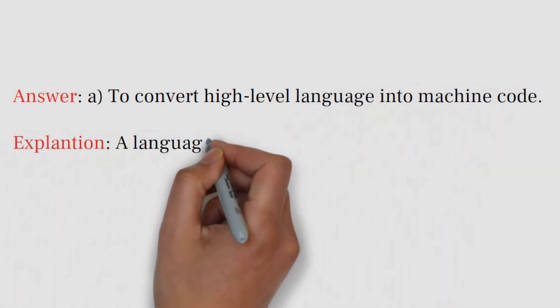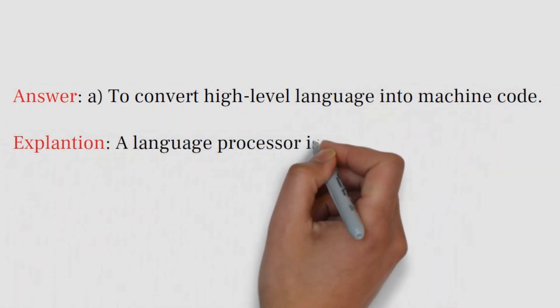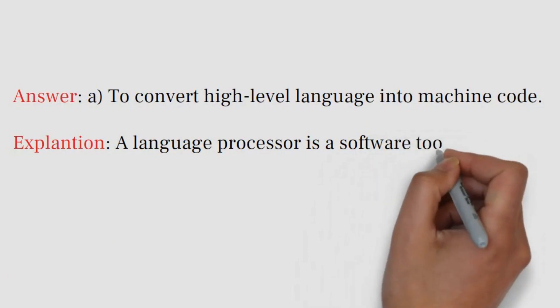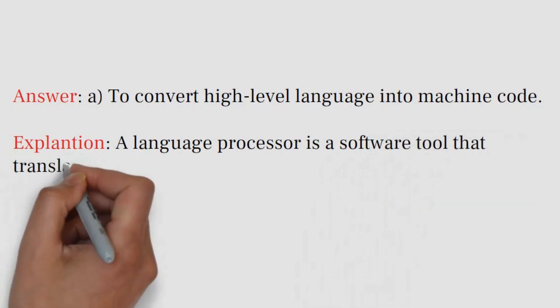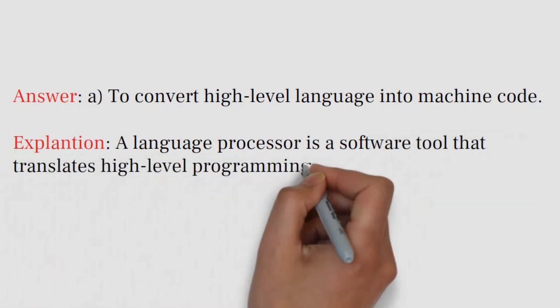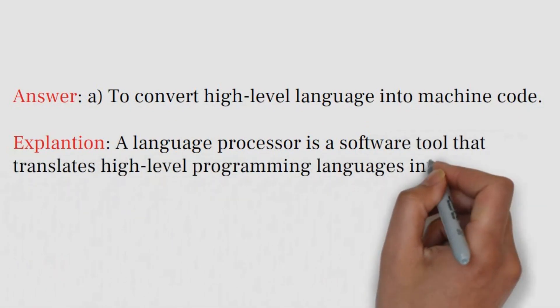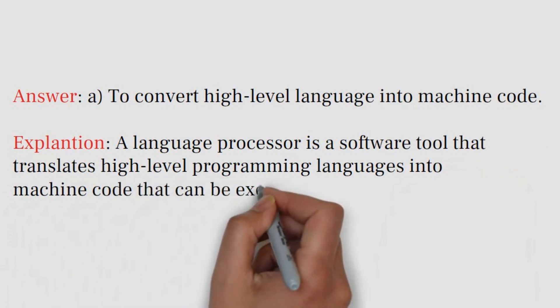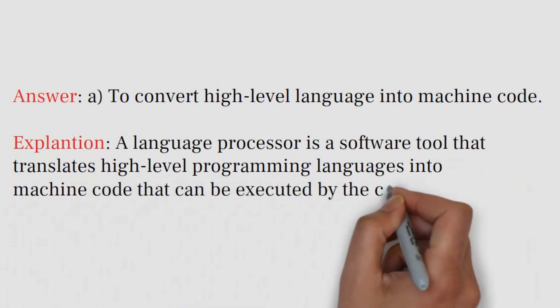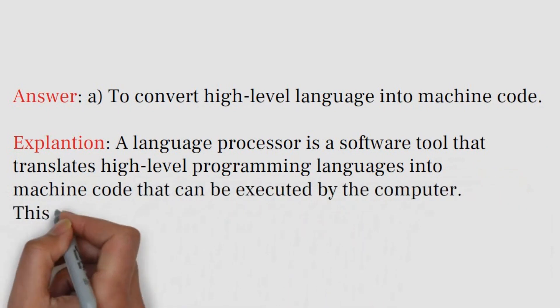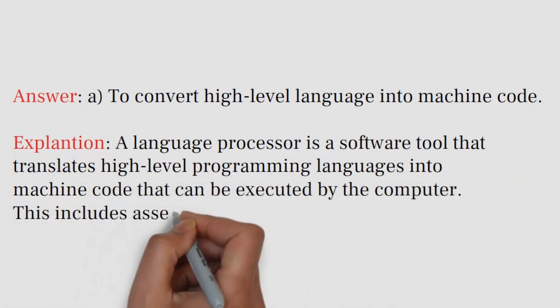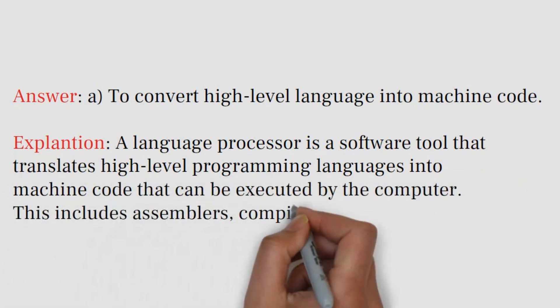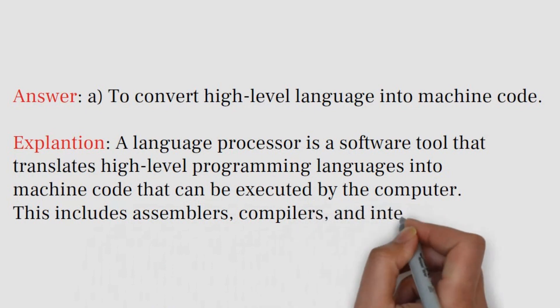Explanation: A language processor is a software tool that translates high-level programming languages into machine code that can be executed by the computer. This includes assemblers, compilers, and interpreters.